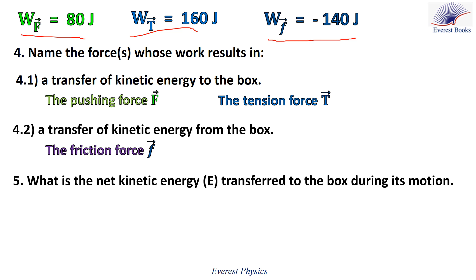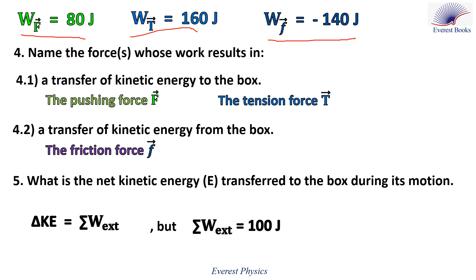Part five: what is the net kinetic energy transferred to the box during its motion? According to the work-energy theorem, the change in kinetic energy of the box equals the net work done on the box. In the previous slide, we calculated the net work — it equals 100 joules. Since the net work is positive, the box gains kinetic energy whose value is 100 joules.